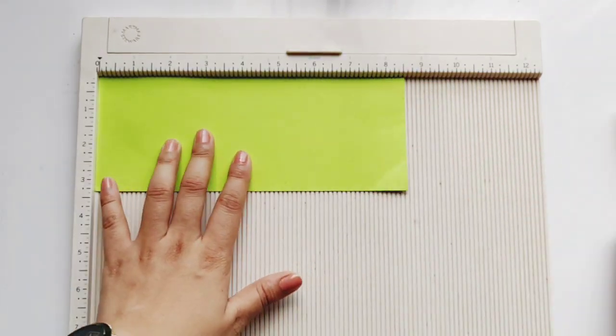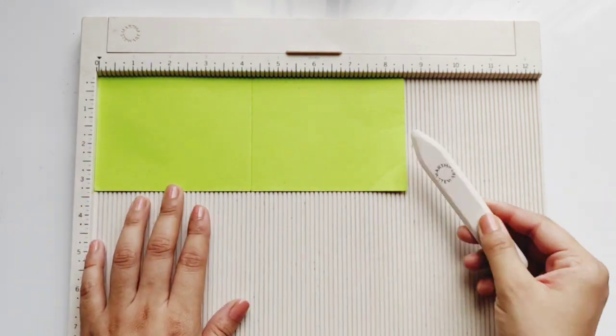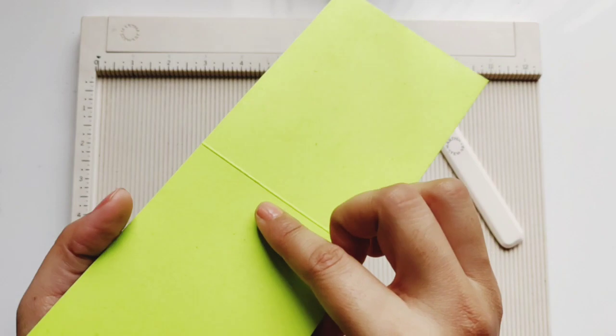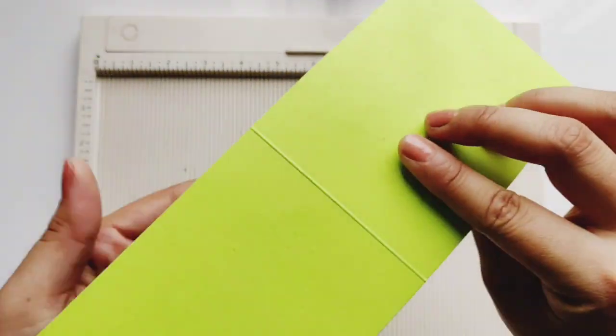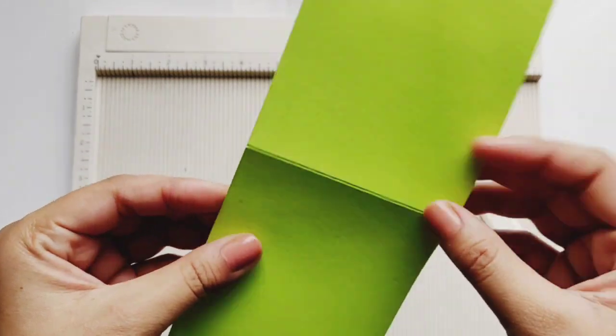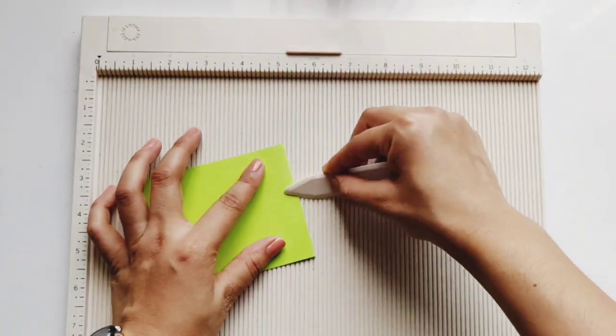The first use is the basic use for the scoring board, that is creasing the paper on the given lines where you want to fold the paper. So when you fold the paper, it gets two effects which is one embossed and one debossed. Please fold your paper on the debossed side so that the paper doesn't tear off later.